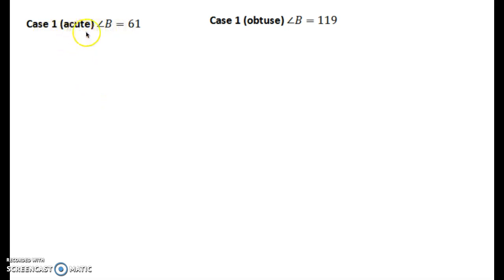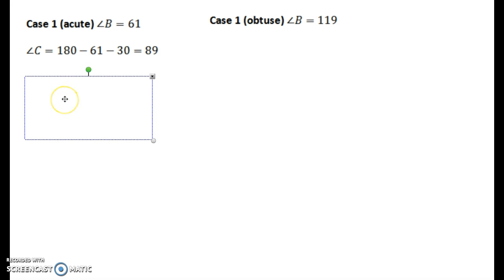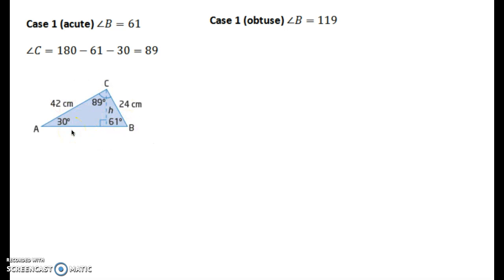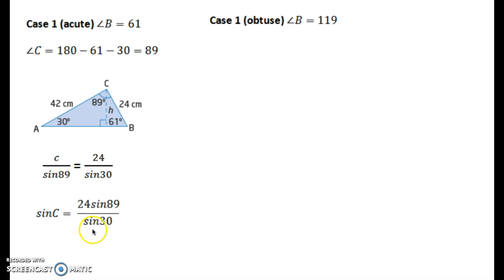There are going to be two scenarios we're calculating. The first one is when B is acute. If B is acute, then angle C equals 180 minus B minus the given angle A, which was 30, so C will equal 89 degrees. Now we need to figure out side length C — using our sine law, we have C over sine 89 equal to 24 over sine 30. Rearranging for C and calculating, we find that C equals approximately 47.992.